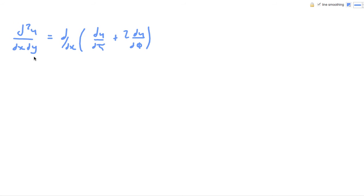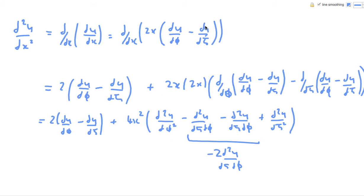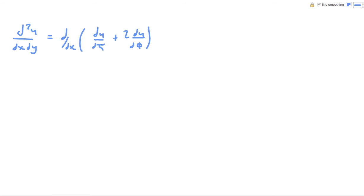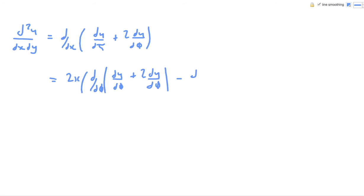Finally we've got the mixed derivative to do: d²u/dx dy. So we're going to do d/dx of the du/dy derivative. We're going to employ the technique we've used here, but instead of putting u back into itself using the x-derivative, we're going to put the du/dy derivative in there as well. So it's going to be 2x times d/dy derivative, i.e., 2x and then d/dφ of the du/dy expression in there. Minus d/dη on the same.